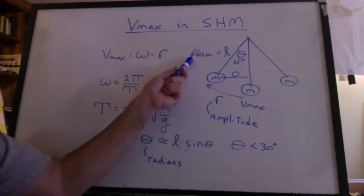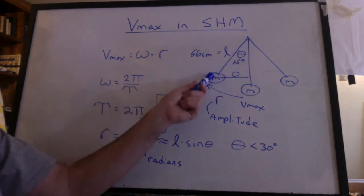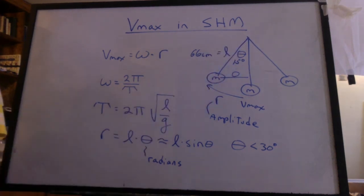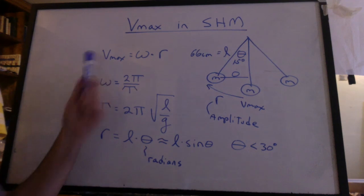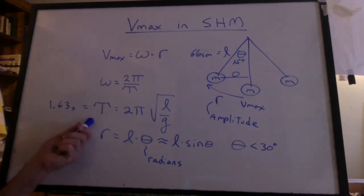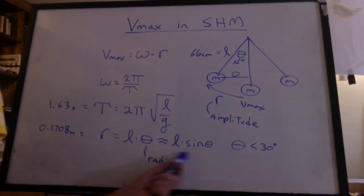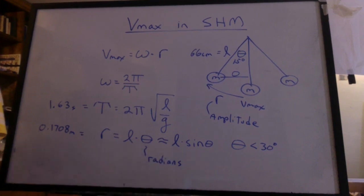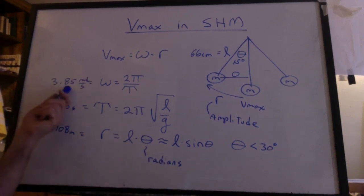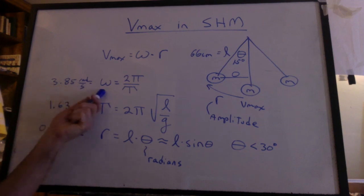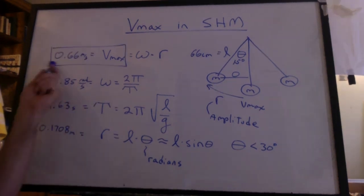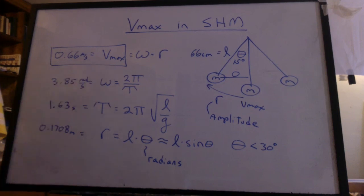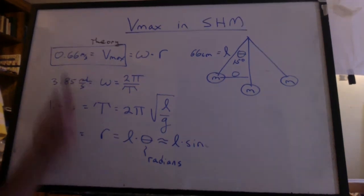In the video lab, we had 66 centimeters for the length of the pendulum, pulled it back 15 degrees. Can you go figure out the Vmax? I get 1.63 seconds for the period. I get 0.1708 meters if I use the approximation. It's going to be very close to this anyway. I get 3.85 radians per second for omega. And I get 0.66 meters per second for Vmax. And that's a theoretical value.